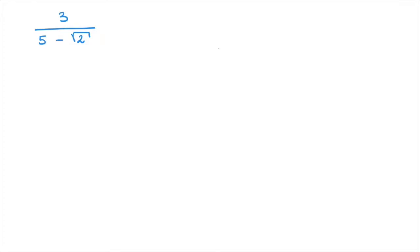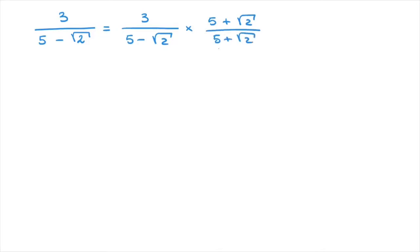Luckily for us, there's a nice little technique we can use. We can state that this equals 3 over 5 minus the square root of 2, times 5 plus the square root of 2 over 5 plus the square root of 2. Notice that the expression I'm currently circling in green has a numerator and a denominator that are equal, and they're both found by using the denominator we were given in the initial expression and changing from a minus to a plus. This expression is equal to 1, and consequently, when I multiply 3 over 5 minus root 2 by this expression, I'm not changing its value — I'm simply writing it in a different way.